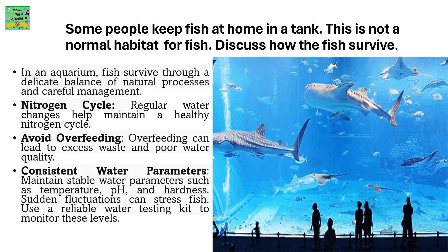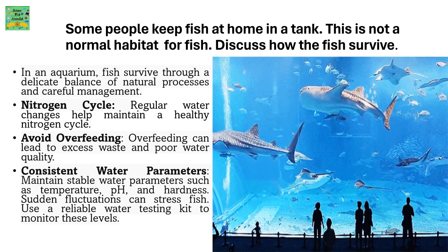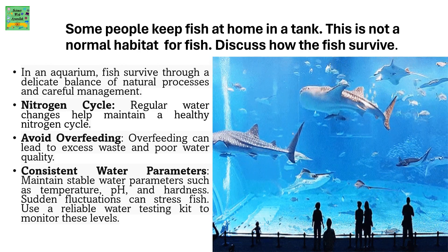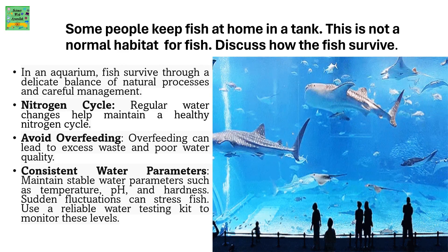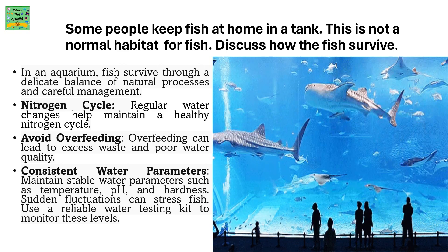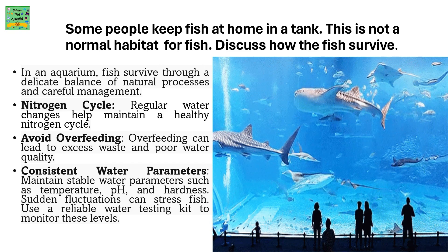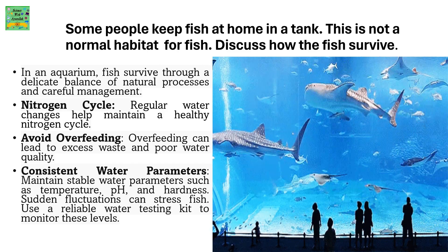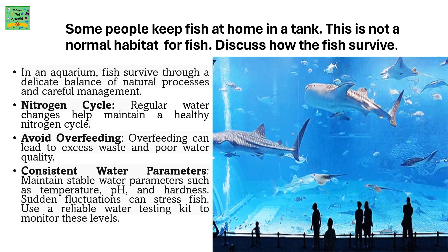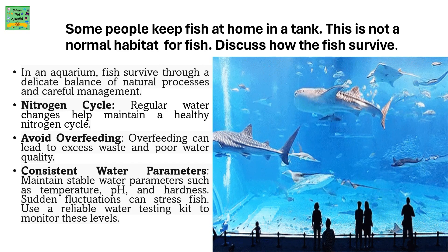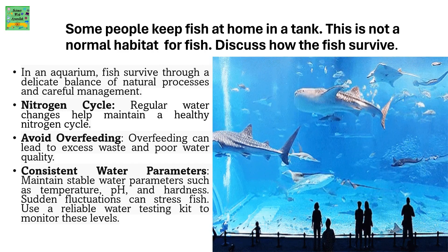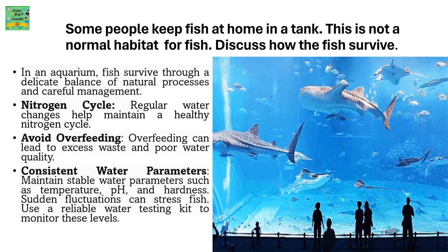Some people keep fish at home in a tank. This is not a normal habitat for fish. Discuss how the fish survive. In an aquarium, fish survive through the delicate balance of natural processes and careful management. Regular water changes help maintain a healthy nitrogen cycle.